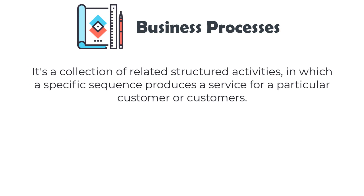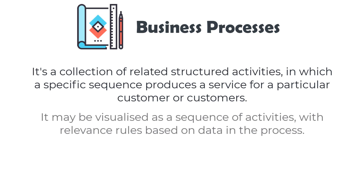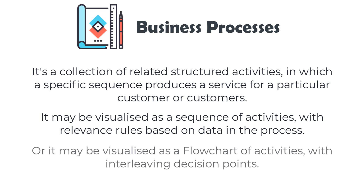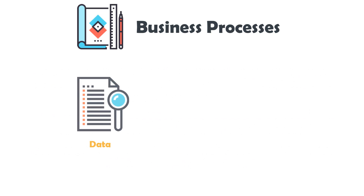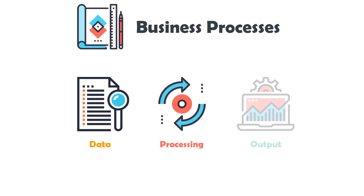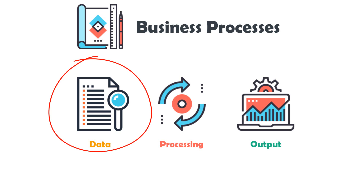A business process is a collection of related structured activities in which a specific sequence produces a service for a particular customer or customers. It may be visualized as a sequence of activities with relevance rules based on data in the process, or as a flowchart of activities with interleaving decision points. In summary, we have data which is processed using some activities to get an output, and the data plays the main role in a process.